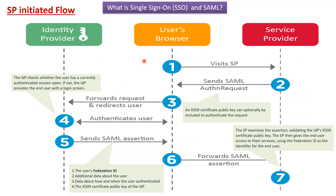Here we will see the SP initiated flow. In this flow, there are three entities: identity provider, user's browser, and service provider. Step one: the user's browser visits the service provider. Step two: the service provider sends a SAML authN request to the user's browser. Step three: the user's browser forwards the request and redirects the user to the identity provider. Step four: the IDP checks whether the user has a currently authenticated session open.